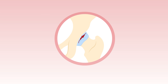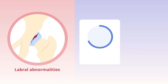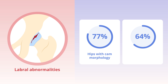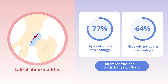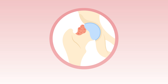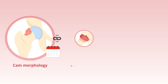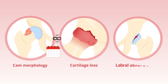Although the researchers observed labral abnormalities in 77% of hips with cam morphology compared to 64% of hips without cam morphology, the difference was not statistically significant. Interestingly, the duration of cam morphology did not appear to influence the risk of cartilage loss or labral abnormalities.